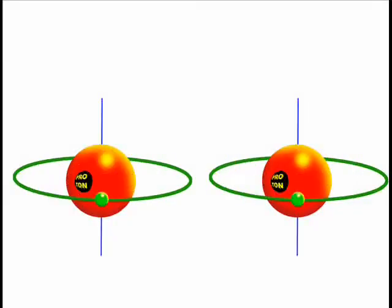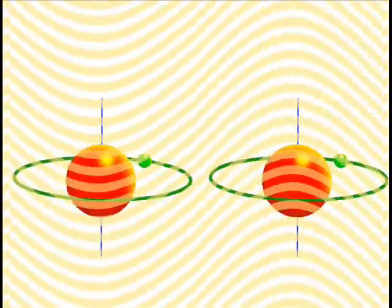The clever bit comes in turning the return signal into a three-dimensional image. To do this, a weaker magnetic field is superimposed on the stronger field. This weaker field creates a magnetic gradient across the body.